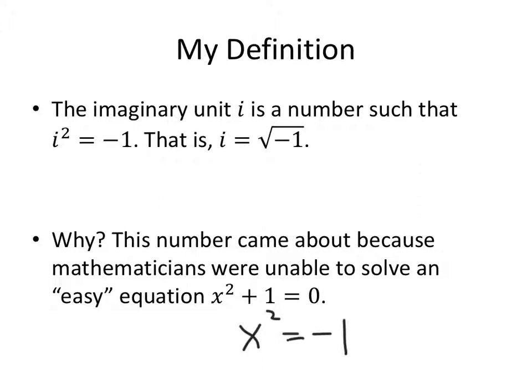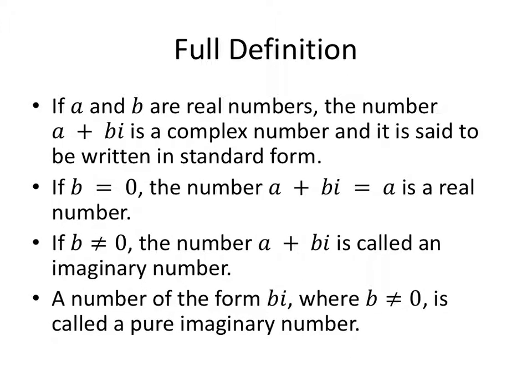Have that voltage running through you? Oh, it hurts. So what are these numbers? If A and B are real numbers, the number A plus Bi is a complex number — much better name — and it's said to be written in standard form. A and B are real numbers. All the real numbers — integers, rationals, pi, e, irrational numbers, square root of 2 — all of those could be our A and B values.